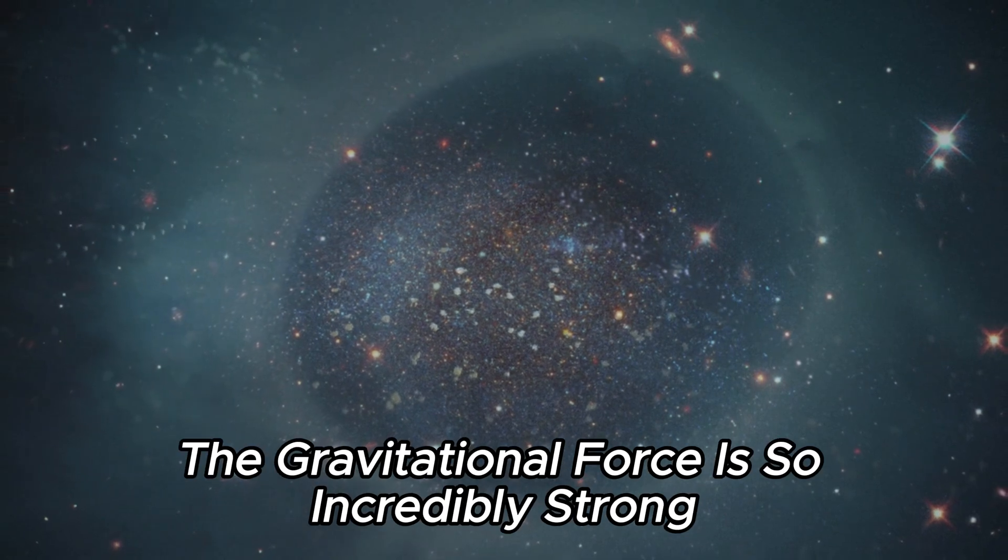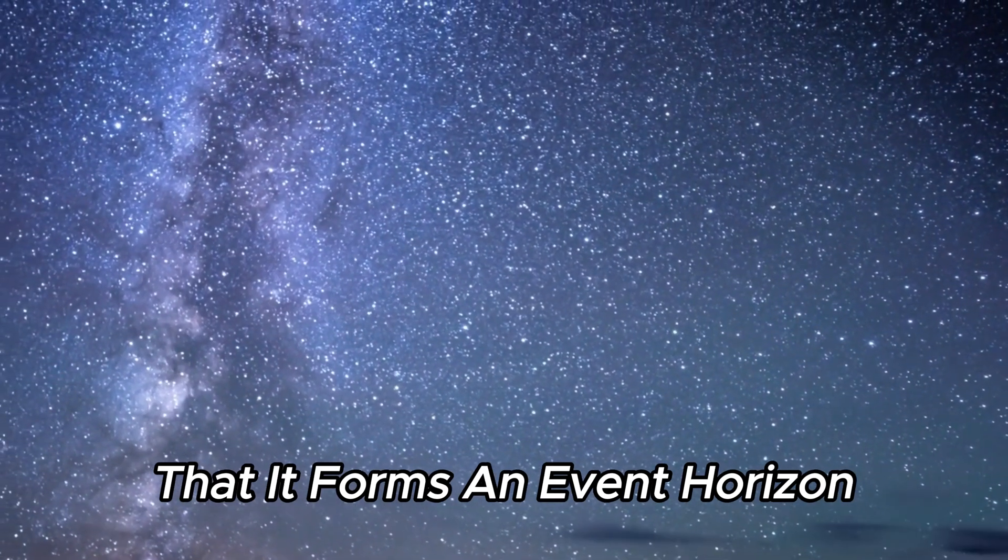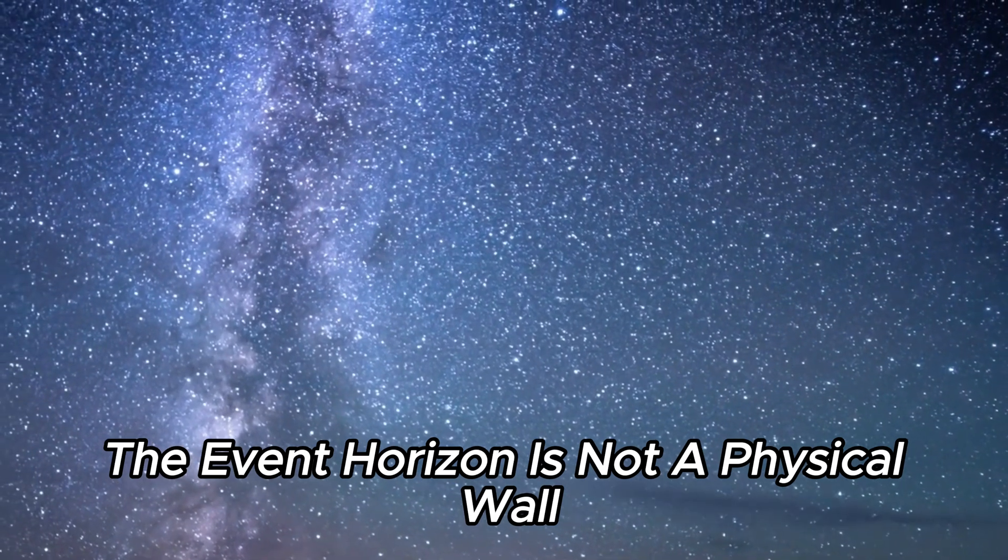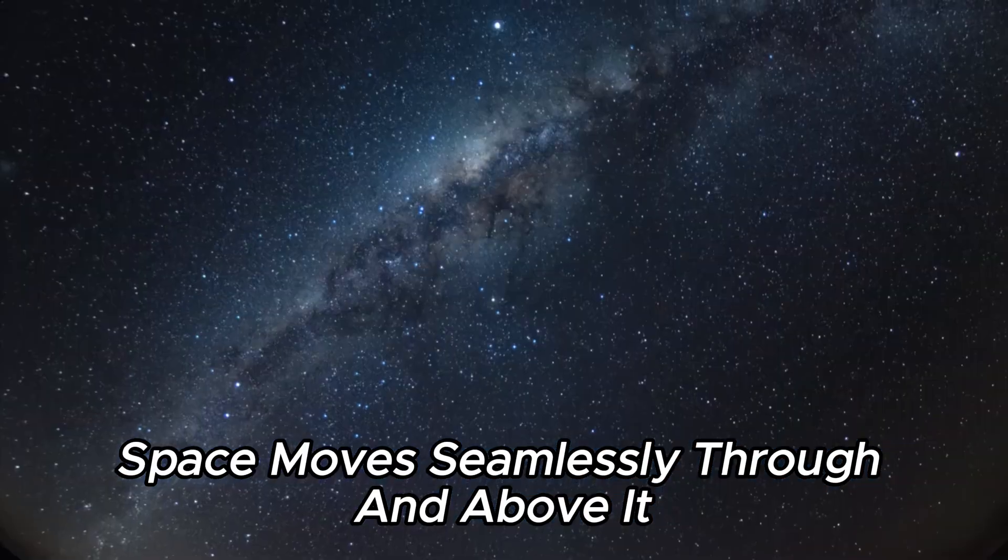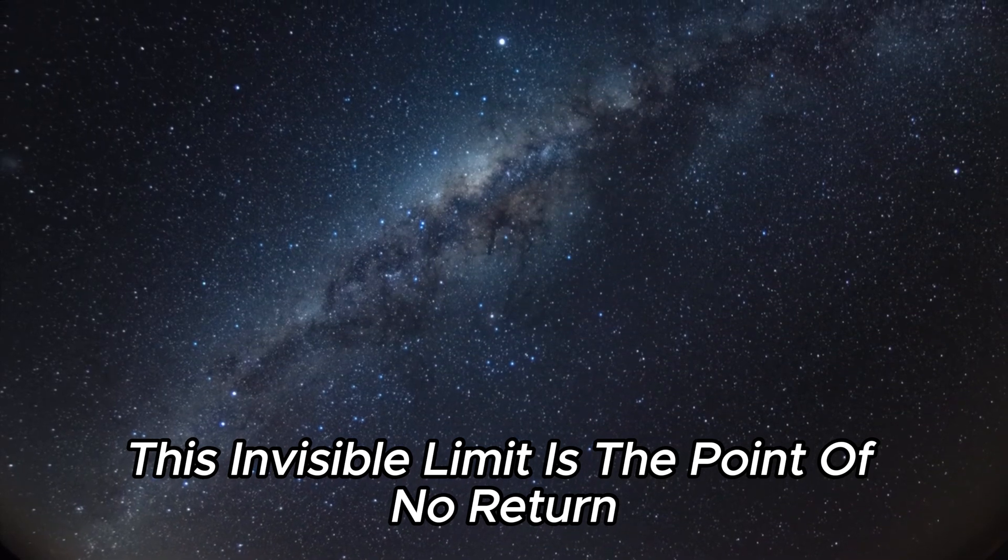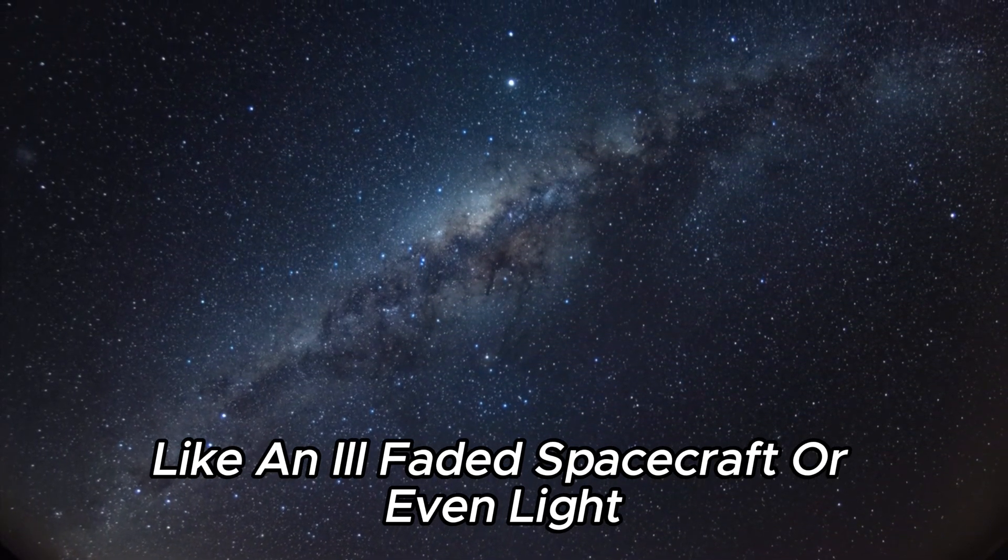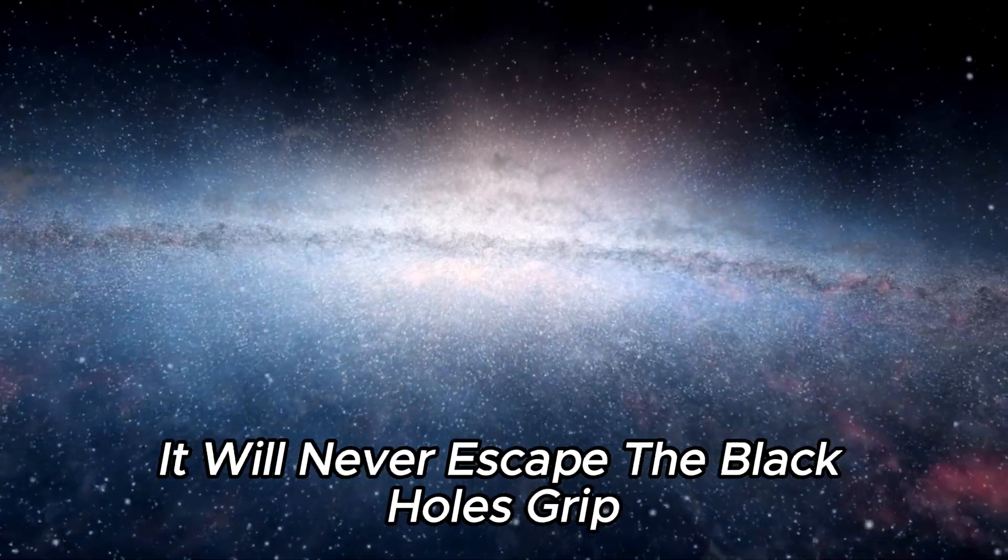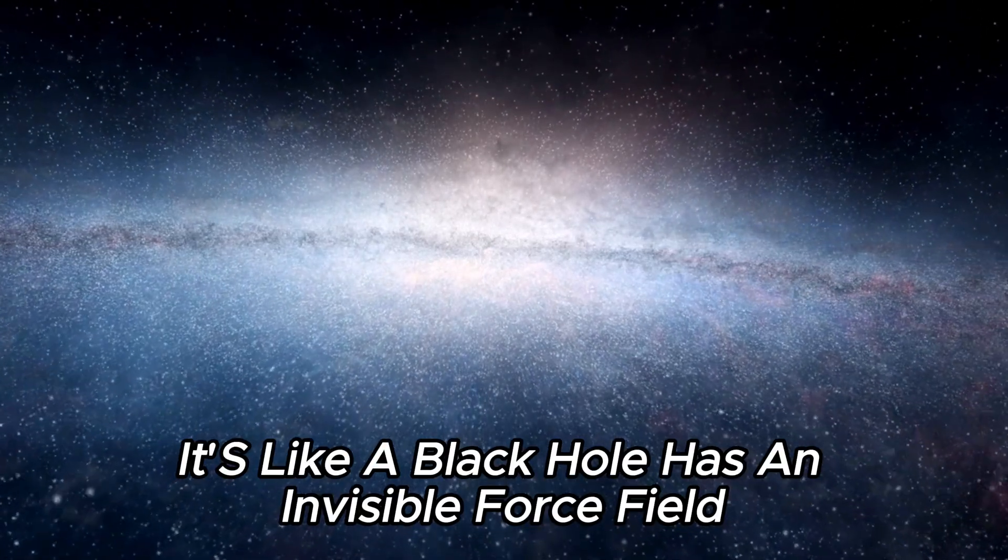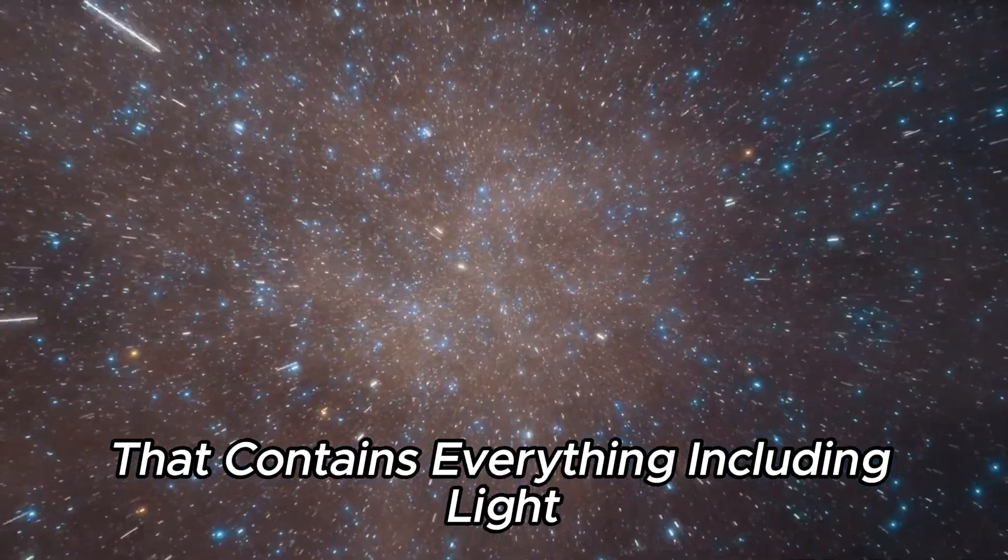Near a black hole, the gravitational force is so incredibly strong that it forms an event horizon. The event horizon is not a physical wall. Space moves seamlessly through and above it. This invisible limit is the point of no return. If something crosses this boundary, like an ill-fated spacecraft or even light, it will never escape the black hole's grip. It's like a black hole has an invisible force field that contains everything, including light.